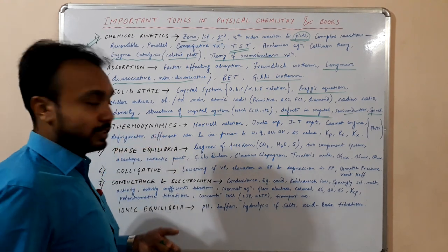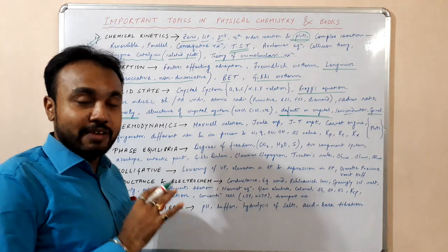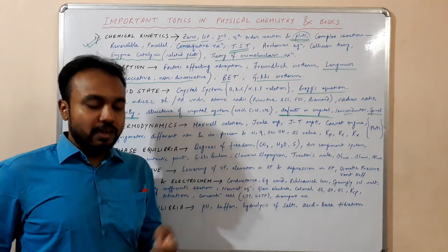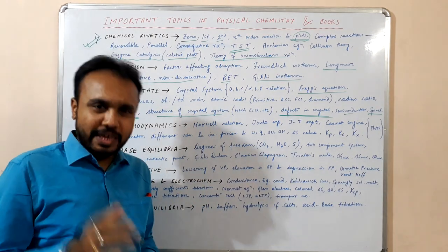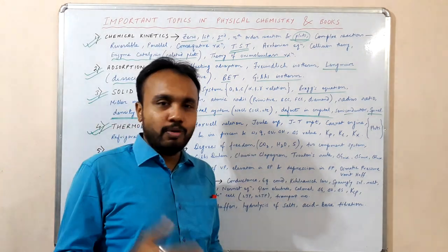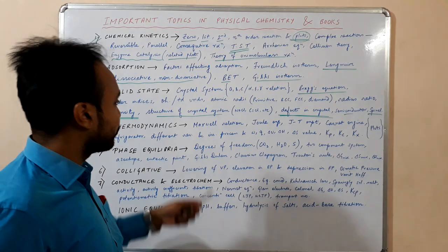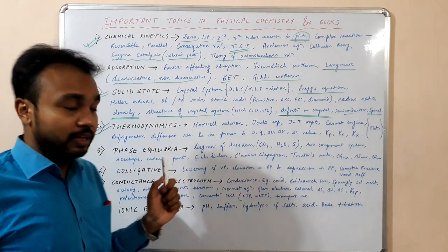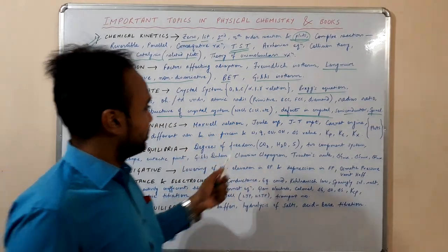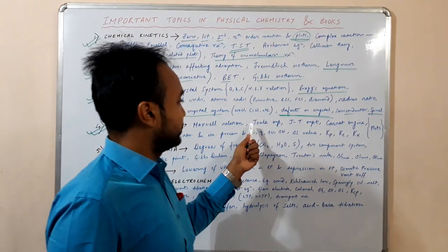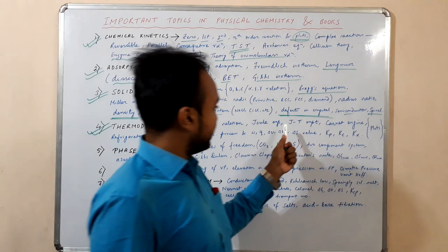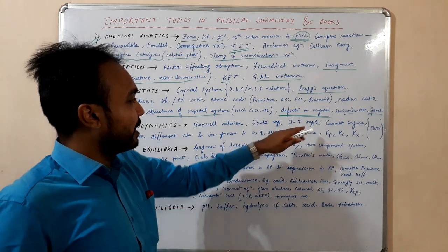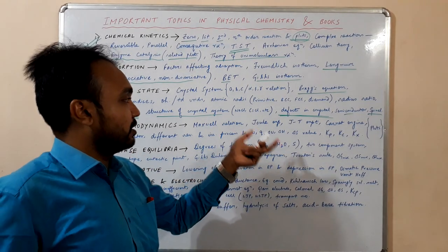Next, let's move to thermodynamics, which is again a very important chapter in every competitive exam. If you have a clear idea of the first law and second law, no need to read them again — just recap all the formulas and write them down in a notebook. The important thing in thermodynamics is Maxwell relations. Then the Joule experiment, which is an iso-energetic expansion, and the Joule-Thomson experiment, which is an iso-enthalpic expansion — from there you get the value of mu_JT, the Joule-Thomson coefficient.